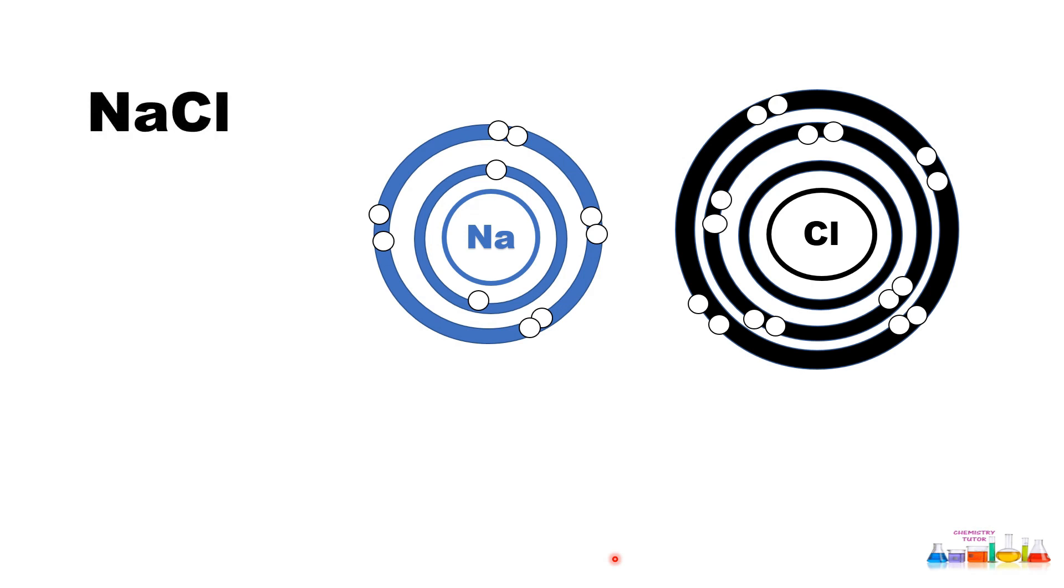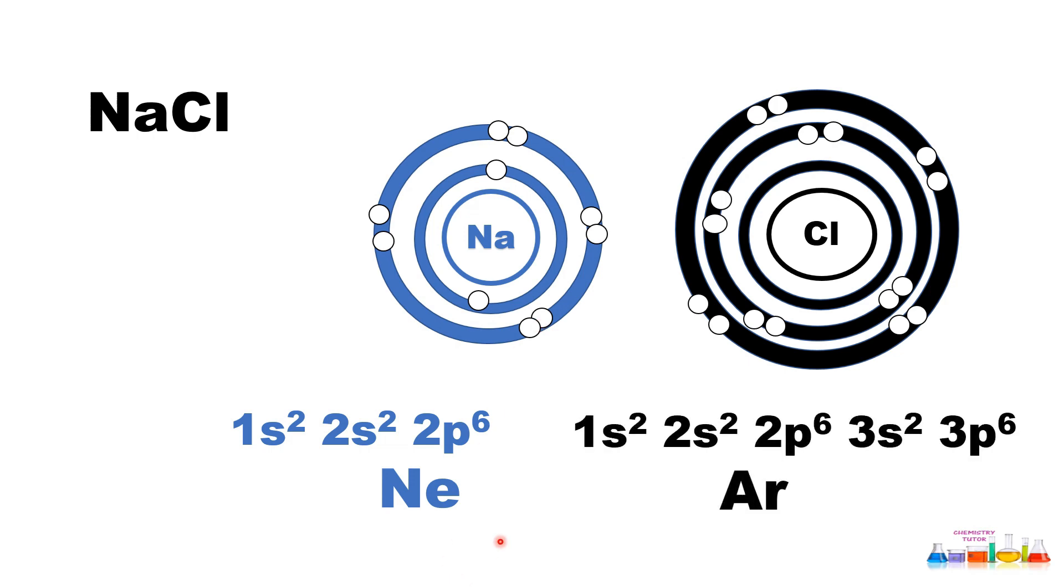They will form NaCl. Sodium has become just like neon: 1s² 2s² 2p⁶, so it is stable like neon. Chlorine is now stable just like argon: 1s² 2s² 2p⁶ 3s² 3p⁶. In this way, they have completed their octet by transfer of electrons - sodium transferring and chlorine accepting.